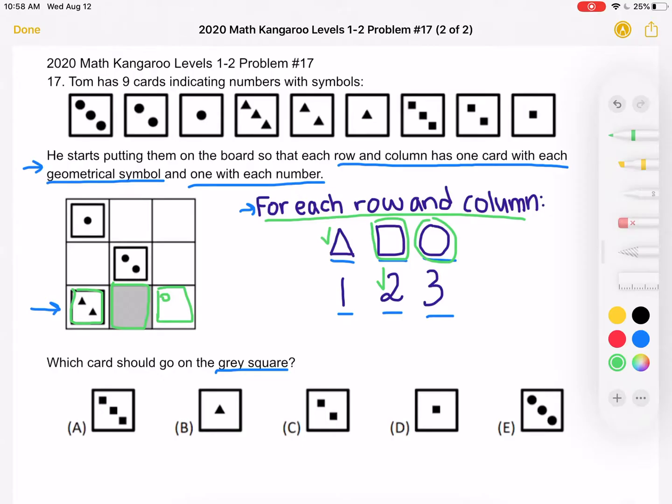And then we need to figure out how many circles there must be. We can already see that we've used the circle card with one and the circle card with two, and we only have the ones with three, two, or one. We've already used one and two, so we must be using the circle card with three circles.